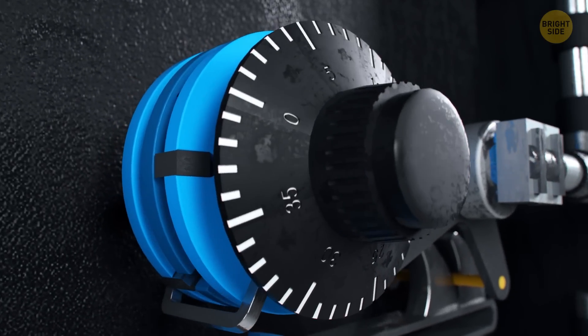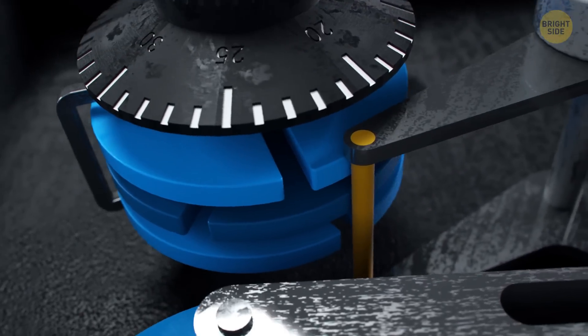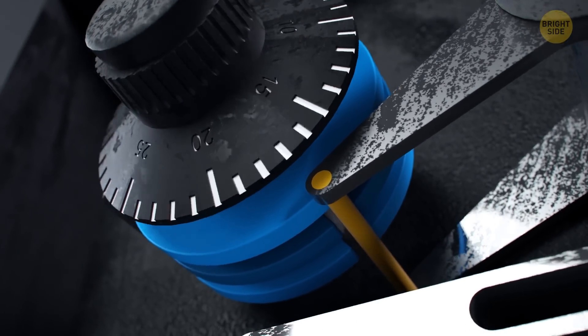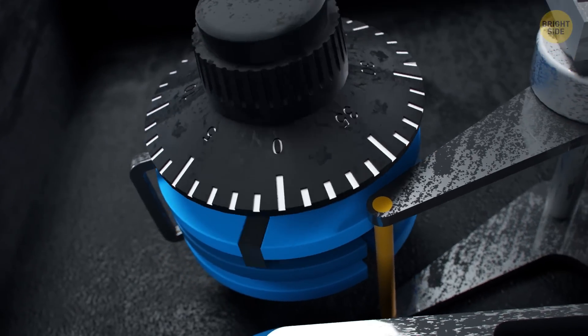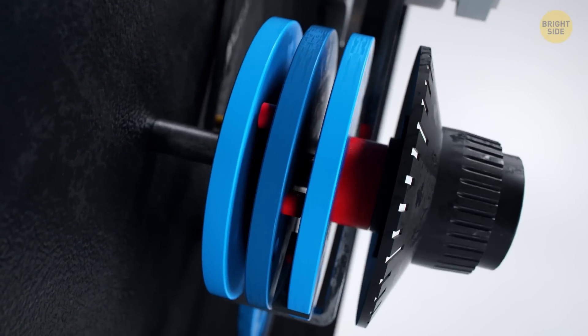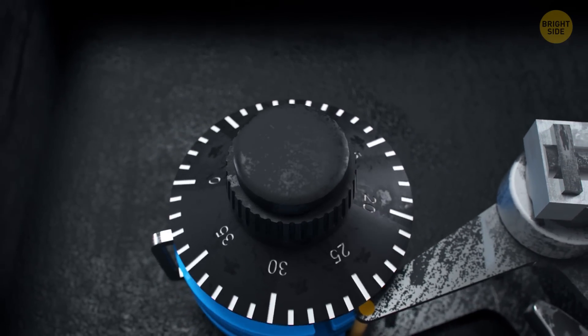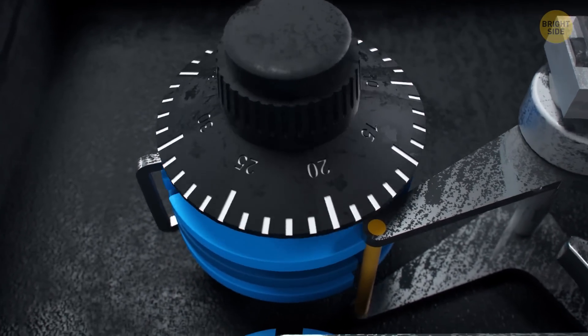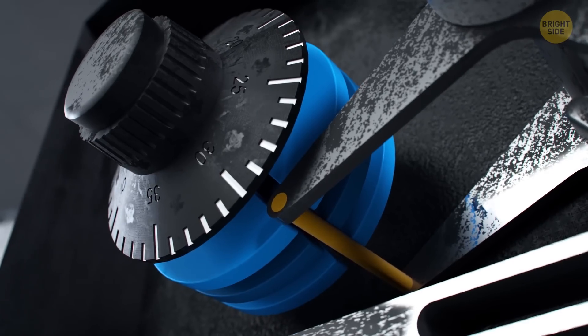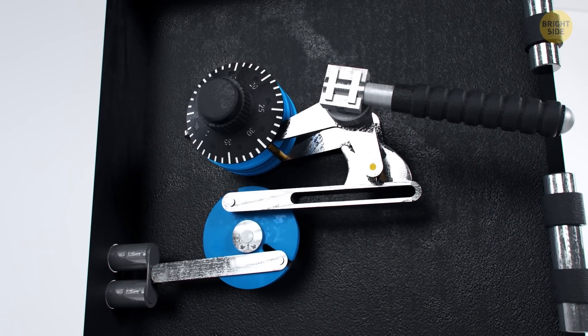When you spin the dial wheel, you are not spinning the first wheel but the last one on the other side of the lock. This is because the teeth of the wheel start turning the first disc, the teeth on the first disc spin the second one, and so on. The first digit in the combination is responsible for the disc set closest to the wheel. The notch on the disc should be directly under the fence. We spin the combination wheel in the opposite direction to set the second disc in the correct position. We reverse the direction of rotation again and set the third disc in the right position.